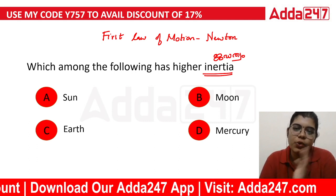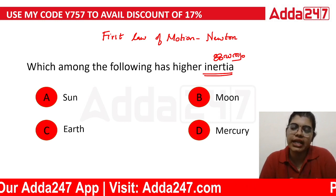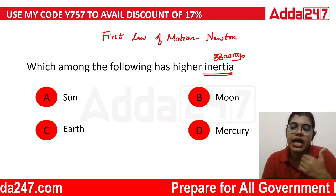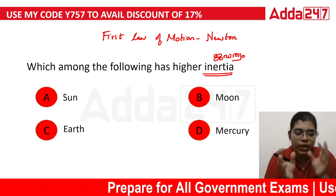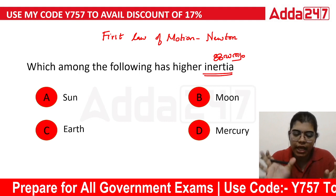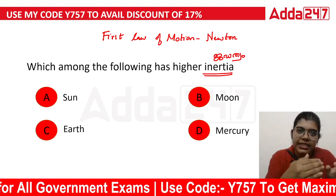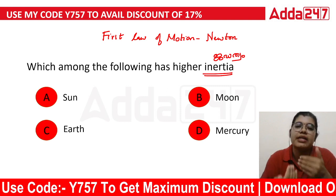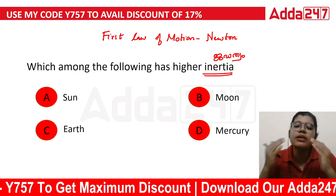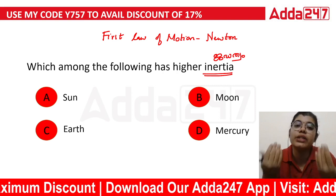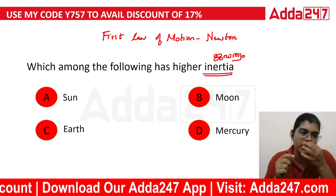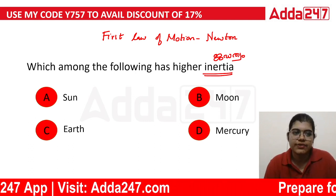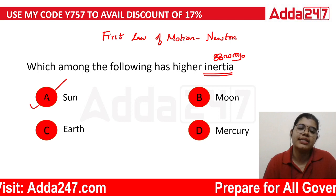The options are sun, moon, and earth. The inertia of a body is the measure of its mass. Mass of the body is the measure of inertia. The body needs resistance to change. Which among the following has higher inertia? The answer is sun — the sun has the highest mass, so it has the highest inertia.